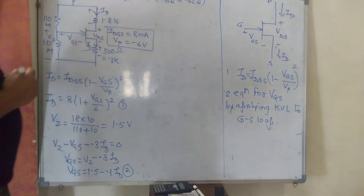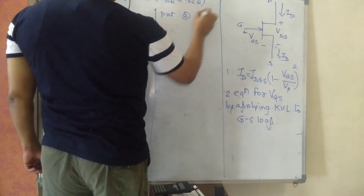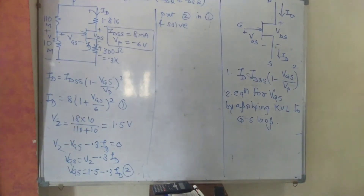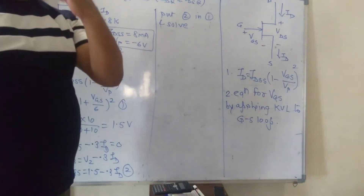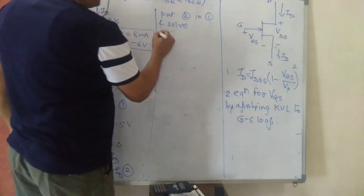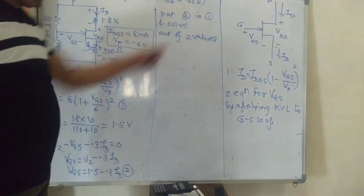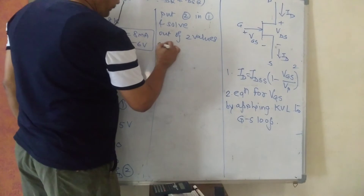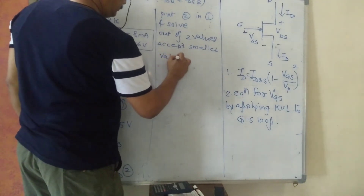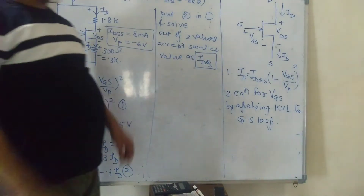Now put equation 2 into equation 1 and solve. Since equation 1 is a quadratic equation, you will get two values. Out of these two values, accept the smaller value as the answer — select the smaller value of ID.